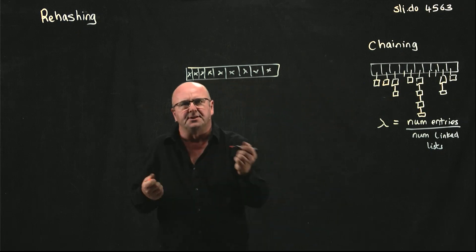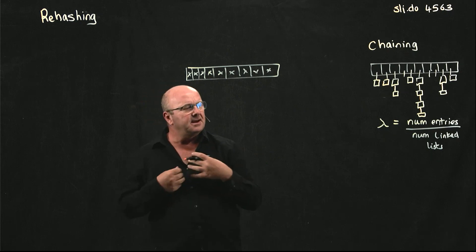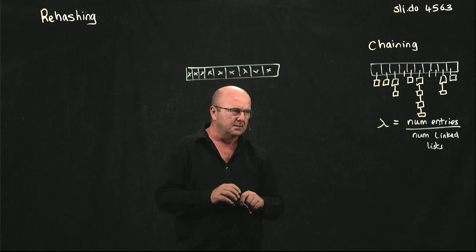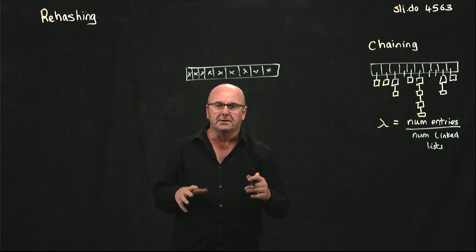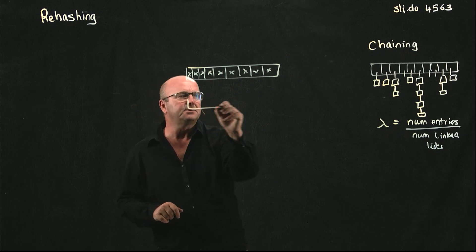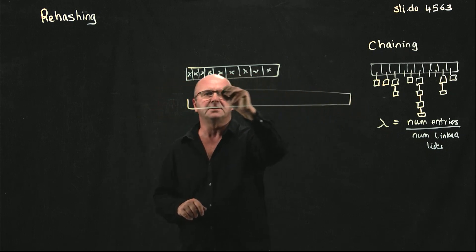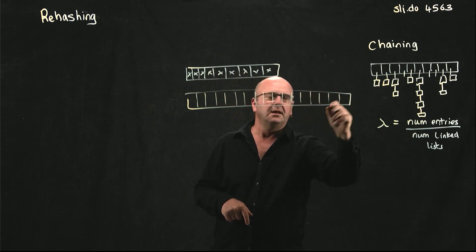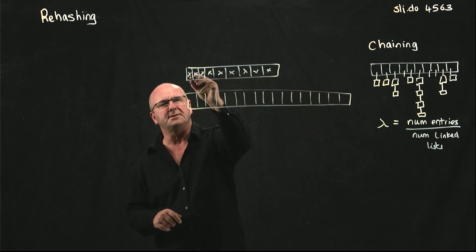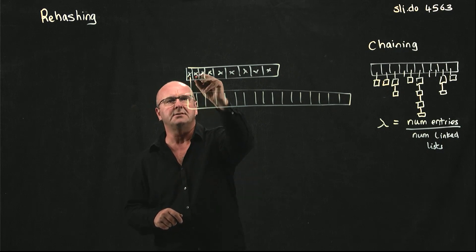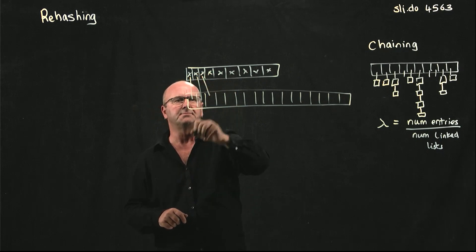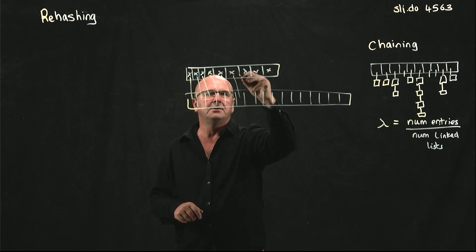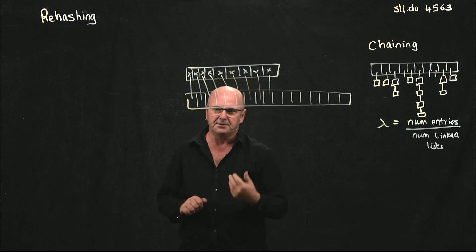If we have a standard traditional array and it becomes full, what do we do? We make a new array twice the size, and we copy everything over. The element in position zero goes into position zero, position one goes into position one, position two goes into position two, and so on. We've copied everything from our old array to our new array.